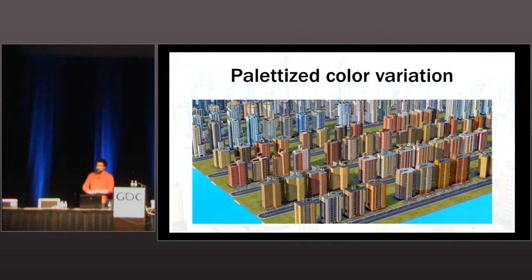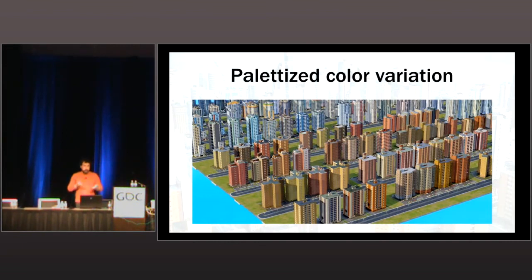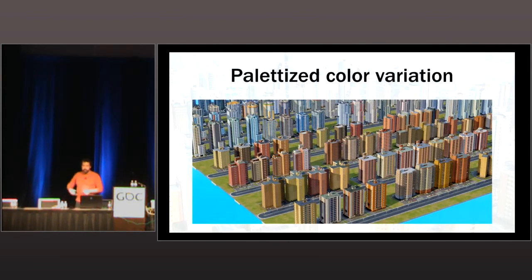Another technique we used across pretty much every asset category is palettization. We only had time and budget to make a lot of buildings, but not an infinite number, and we wanted to extend visual variety. Instead of hard-coding colors into facades, we palettized them and mix and match. The four buildings in the foreground share the same architecture and facade rules — by twiddling the palettes you get variation essentially for free.